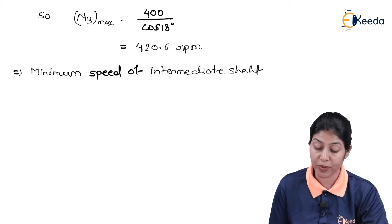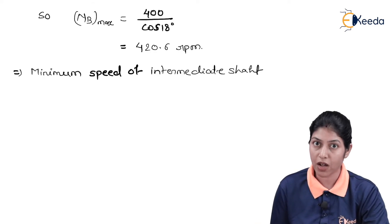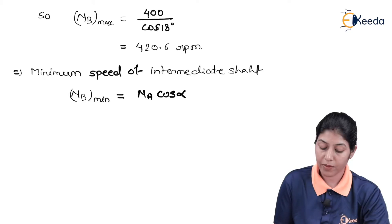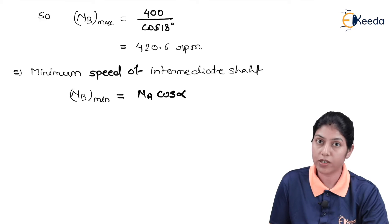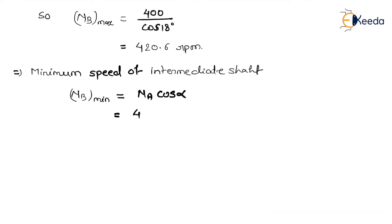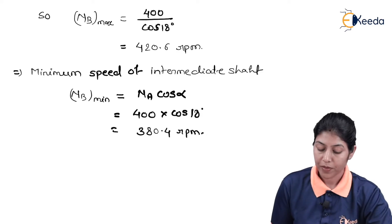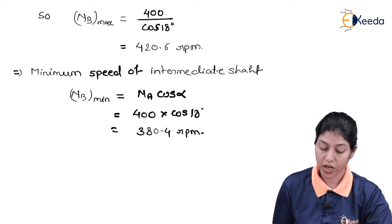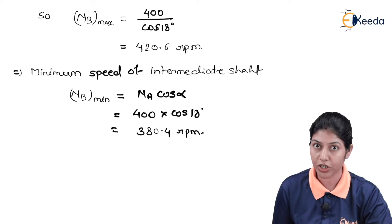For the minimum speed of the intermediate shaft with respect to the driving shaft, the formula is NB minimum = NA × cos α. Substituting the values, NB minimum = 400 × cos 18°, which gives 380.4 RPM. So we now have the maximum and minimum speed of the intermediate shaft.